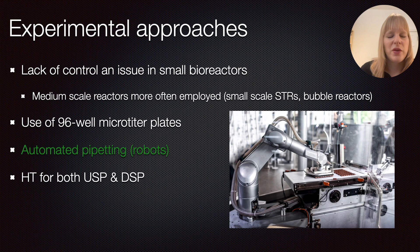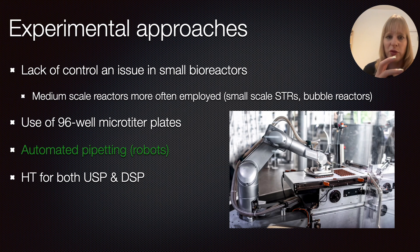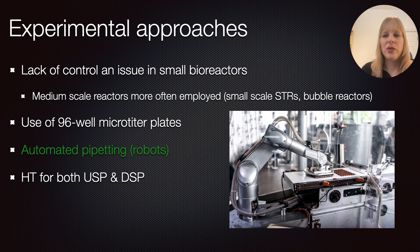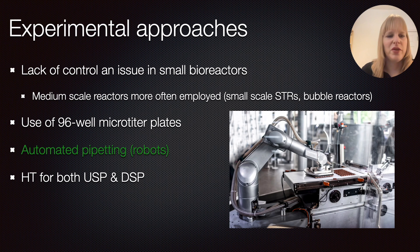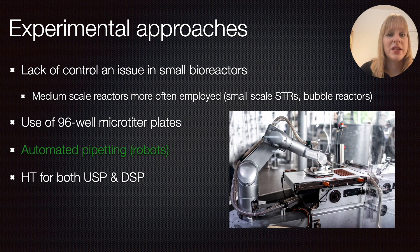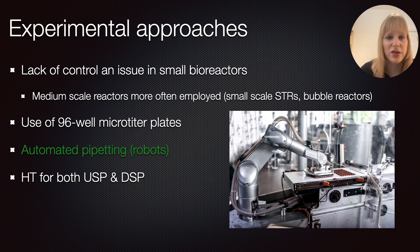High-throughput screening is very important both for the upstream process — different types of reactors — but equally so for the downstream processing. There are many conditions to screen, for instance when performing chromatography, which is still the standard technique: how do you figure out the best approach, if not just relying on what's available in literature?